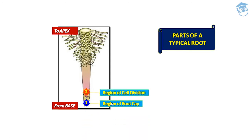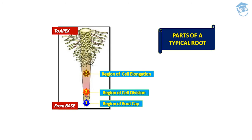The second region is the region of cell division, also called the region of meristematic activity, where cells keep on dividing. The cells of this region are very small, thin-walled, with dense protoplasm, and they divide repeatedly. The cells proximal to this region undergo rapid elongation — this is the region of cell elongation, responsible for the growth of the root.